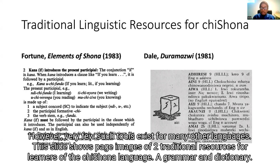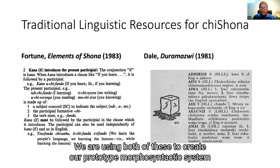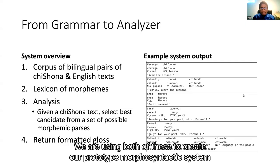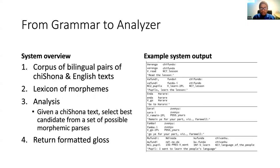This slide shows page images of two traditional resources for learners of the Chisholna language: a grammar and a dictionary. Using both of these, we created a prototype Morphosyntactic System. Working from information in the learner's grammar, we created a prototype system to produce an interlinear morphemic gloss.